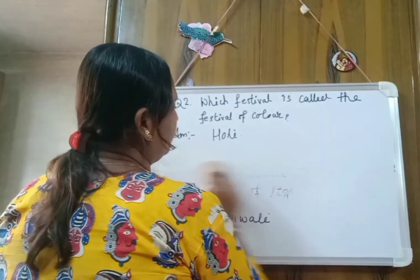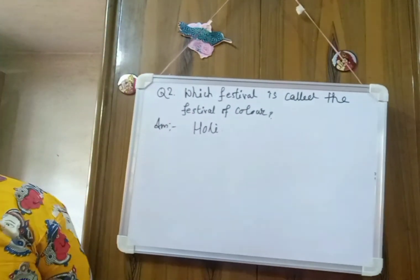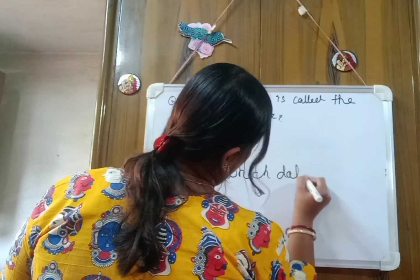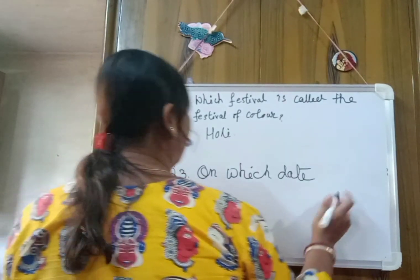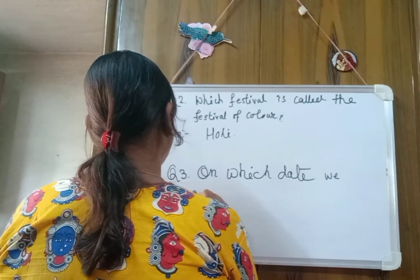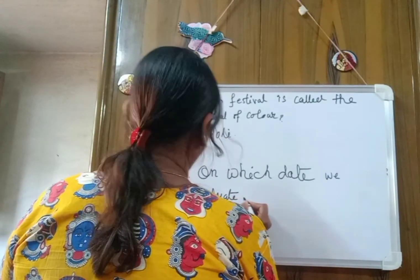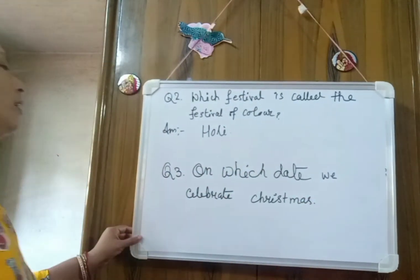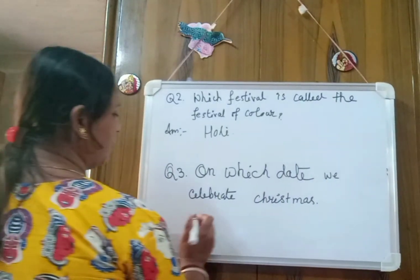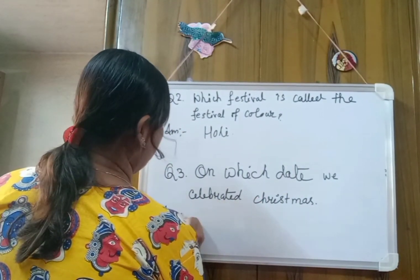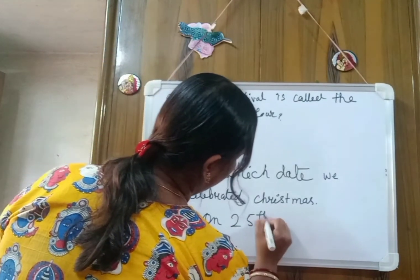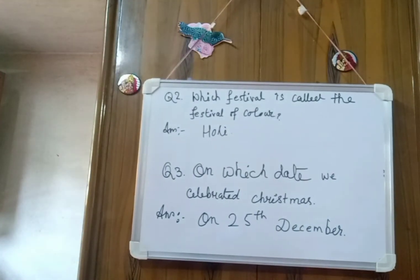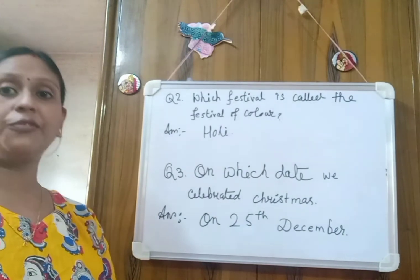Now number three: on which date do we celebrate Christmas? On which date do we celebrate Christmas? On 25th December. Every year on 25th December we celebrate this day as Christmas. So we celebrate 25th December as Christmas day.